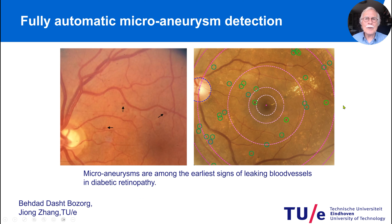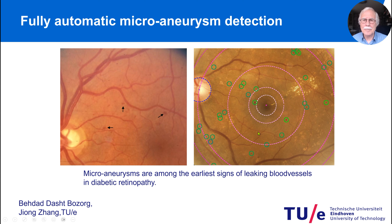We developed a fully automatic microaneurysm detection. The microaneurysm is a very small thickening of the vessel and can be seen as a very tiny dot. To the right, you see the detection of these dots. The intensity of the green circle indicates the probability with which we could find these small microaneurysms. These are the very early signs of diabetic retinopathy — if this happens, you're in trouble and need to see the doctor, change your lifestyle, and take further measures.